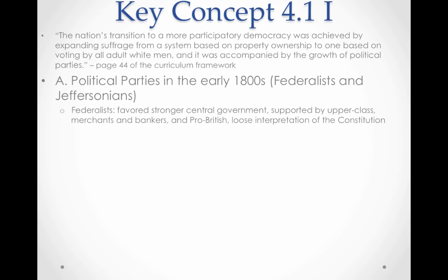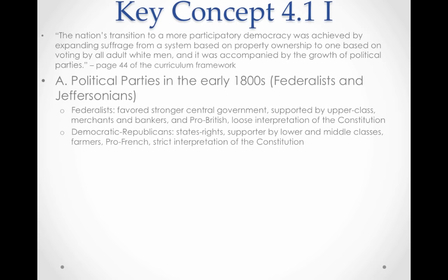The Federalists were the first party system. They tended to favor a strong central government — hence the word 'federalist' — and were supported by upper-class merchants and bankers. They were pro-British because of trade with Britain, focused on improving the economy, and favored a loose interpretation of the Constitution. That is how Hamilton justified the Bank of the United States: just because it's not explicitly in the Constitution doesn't mean it can't be done.